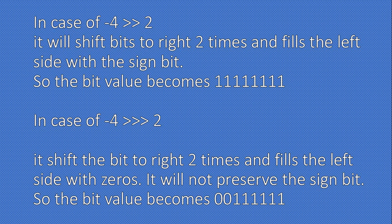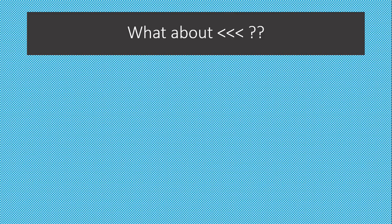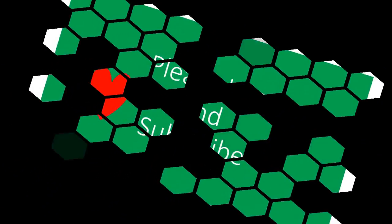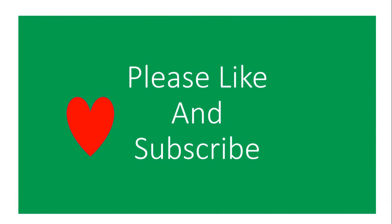So the bit value becomes 11111111 (eight ones) for arithmetic right shift of -4 by 2. In the case of logical right shift of -4 by 2, the bits shift right and the left side is filled with zeros — it does not preserve the sign bit. The result becomes 00111111, which is a positive number. That is the main difference. And if you think there's a left shift equivalent operator with similar complexity — I'm just kidding, there is no such operator in Java. Thank you for your time; I hope this video gave you a lot of new knowledge.